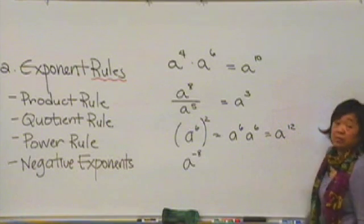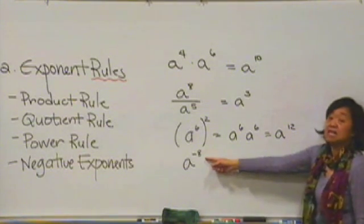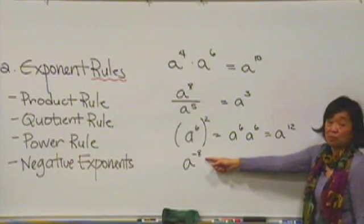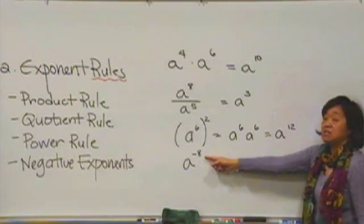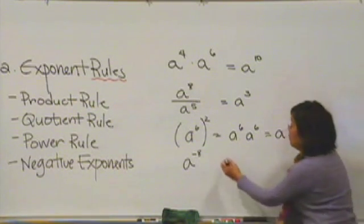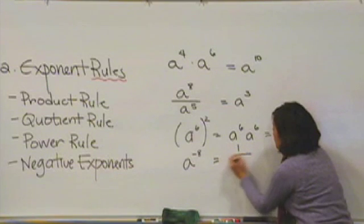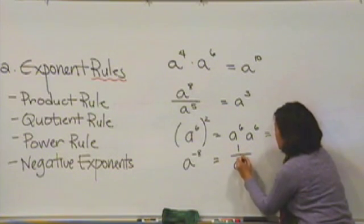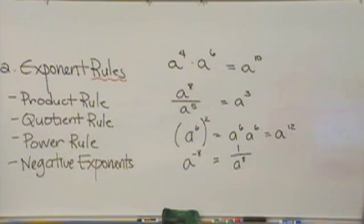And finally, what does a negative exponent mean? A negative exponent simply means the reciprocal. So, a to the negative eighth, if we were to simplify that, we would rewrite this as one over a to the eighth. And that's it for exponents.